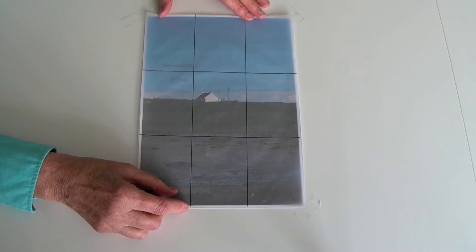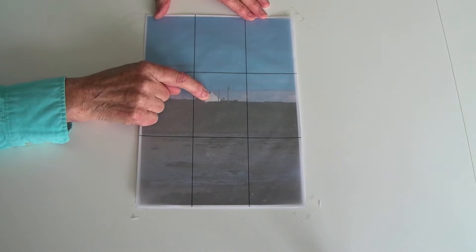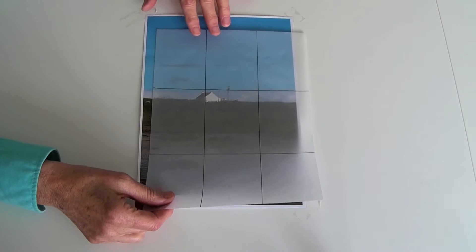The house has ended up right in the middle which we know we don't want. So what we do to reposition it is slip the tracing paper to give us a new position.